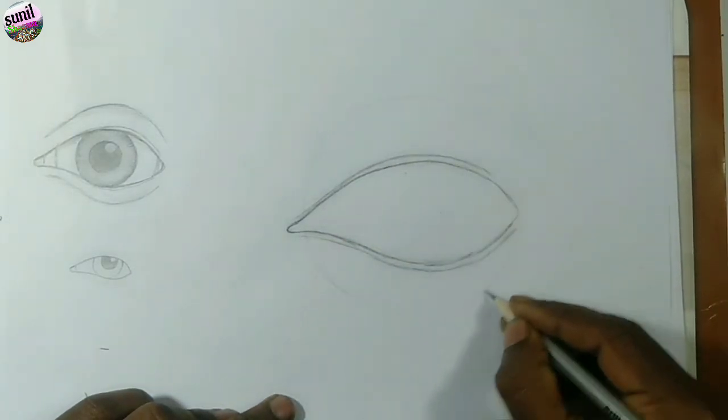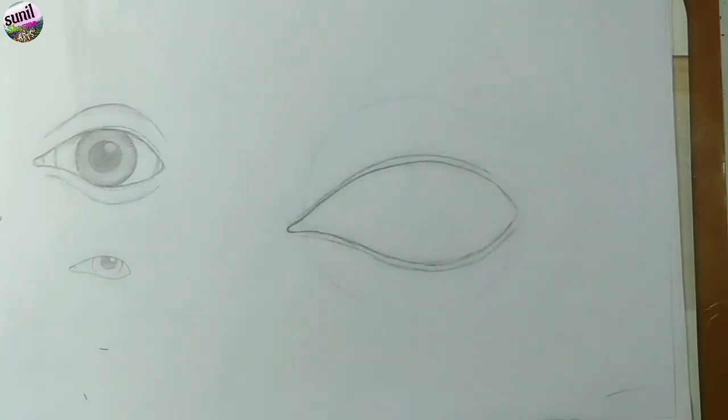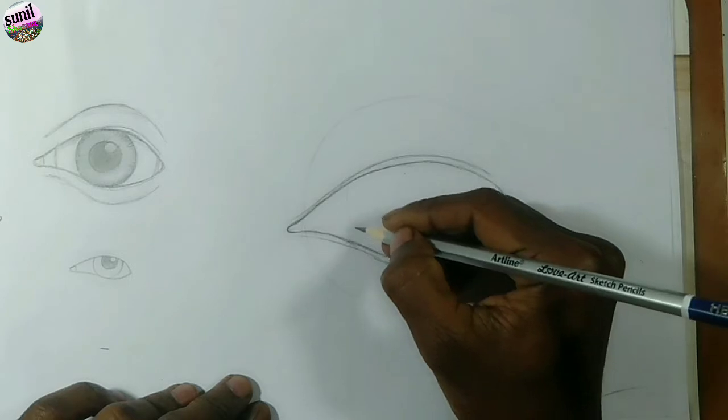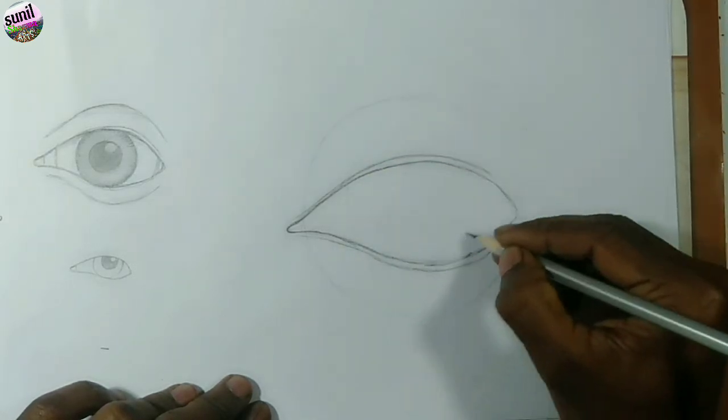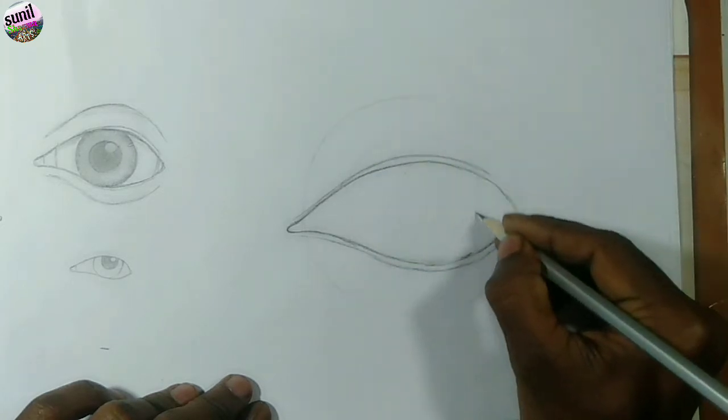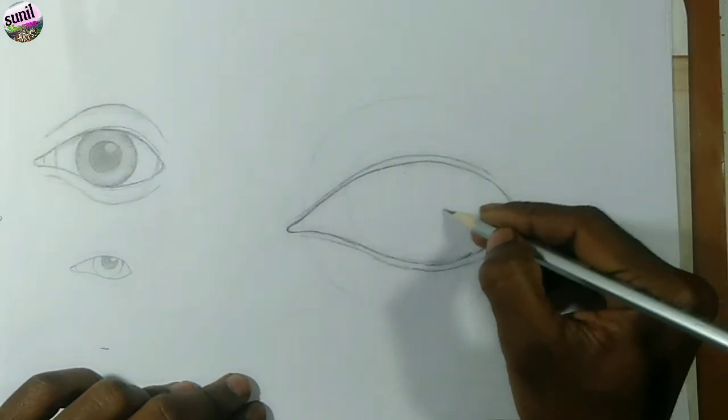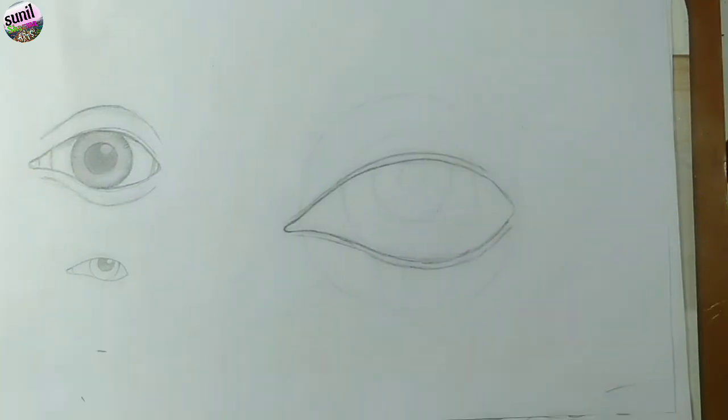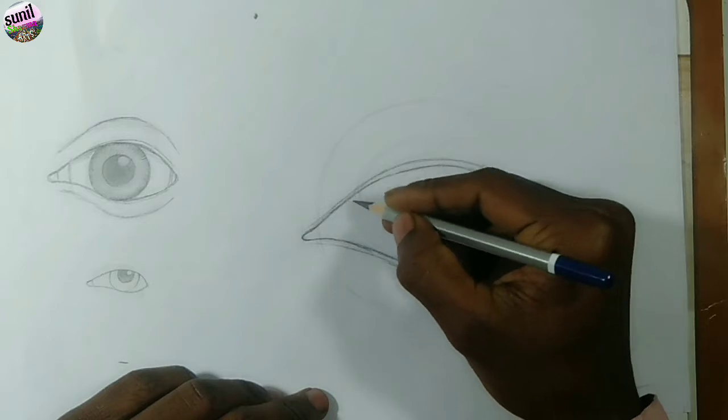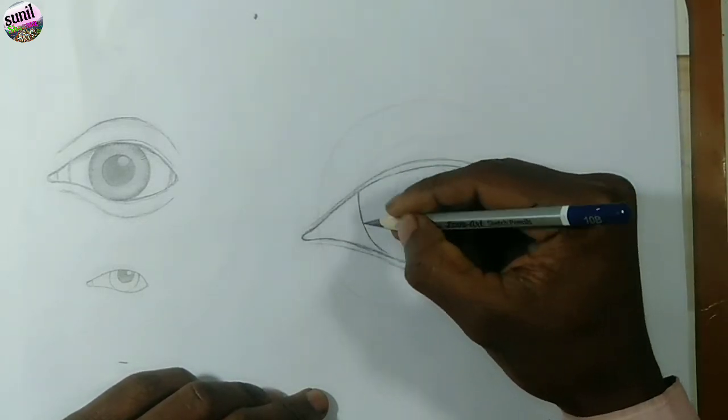Now our eye structure has become complete. We will arrange the rest of the lines. This eyeball will begin here and then the eye is open, the left part.